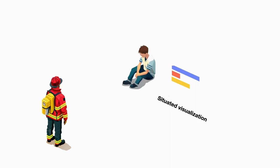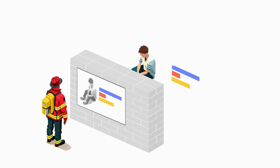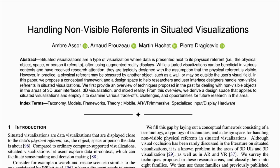In our paper, we provide an overview of techniques proposed in the past for dealing with non-visible objects in the areas of 3D user interfaces, 3D visualizations, and mixed reality. We categorize them among eight families of techniques and derive a design space that applies to situated visualizations.